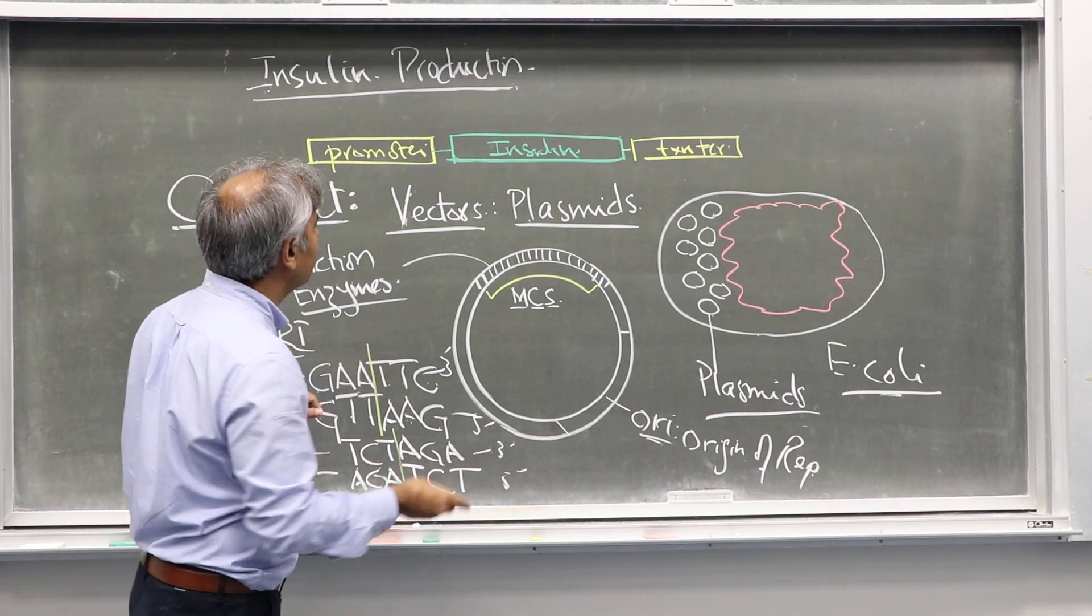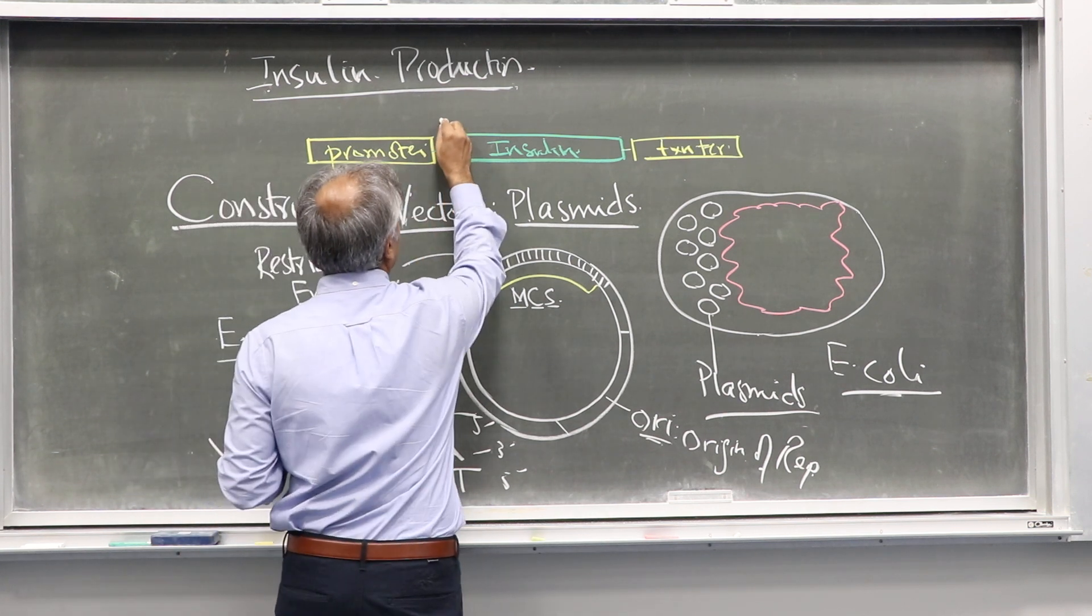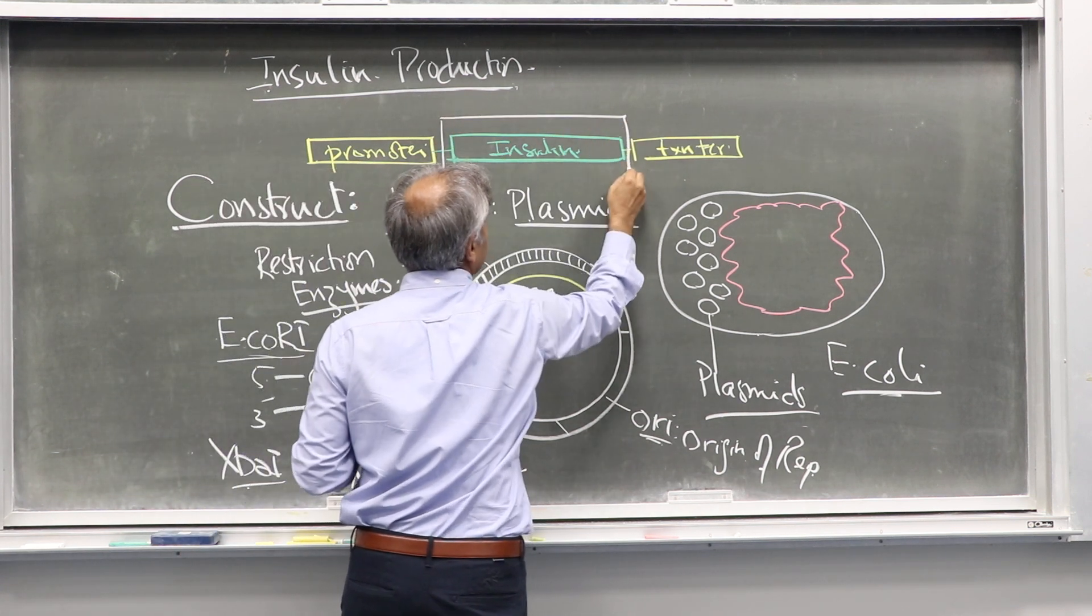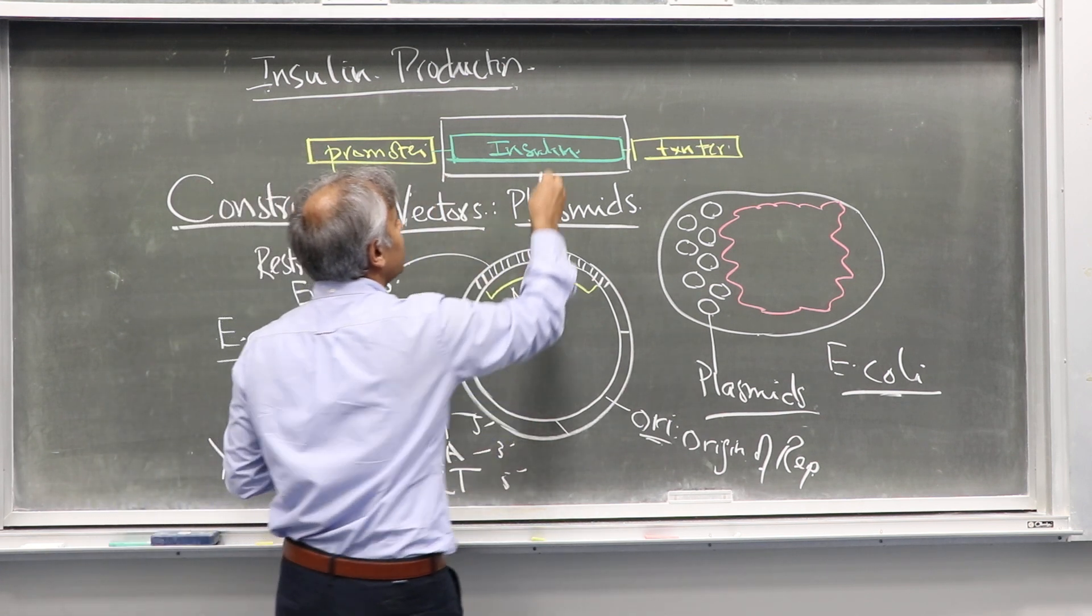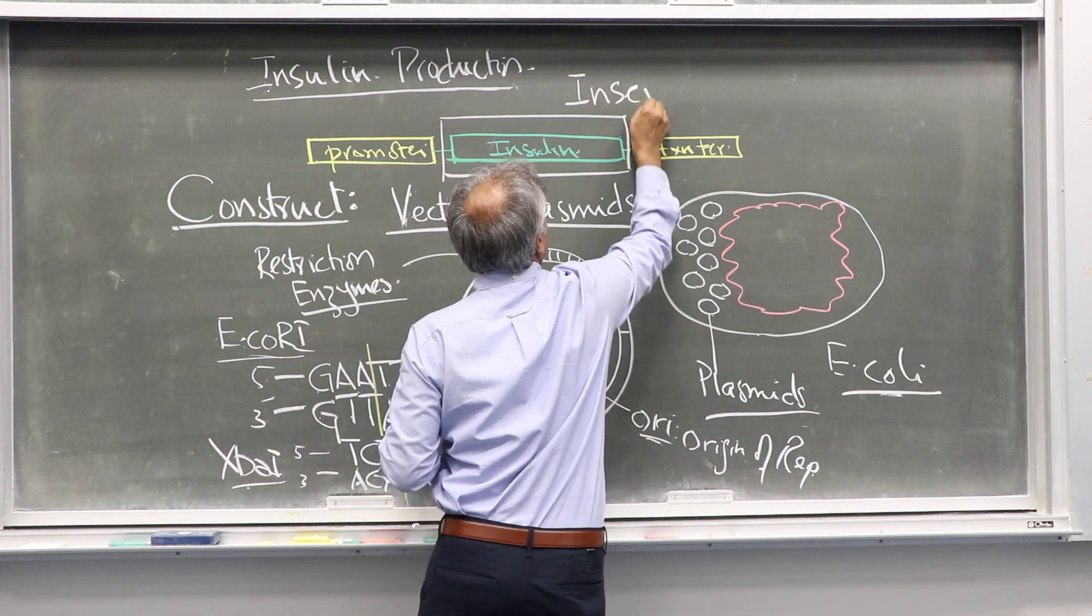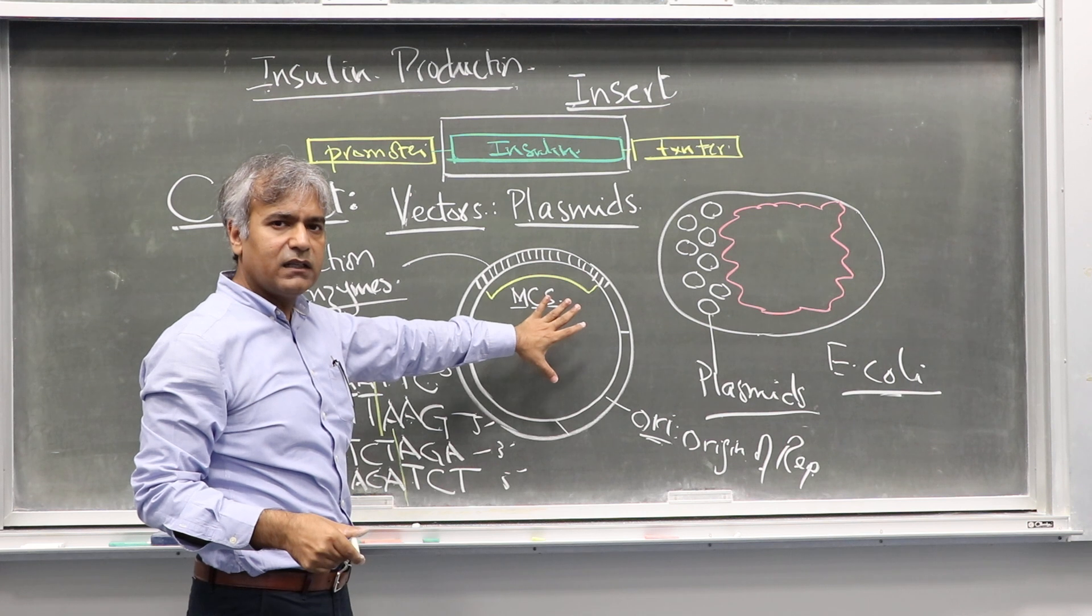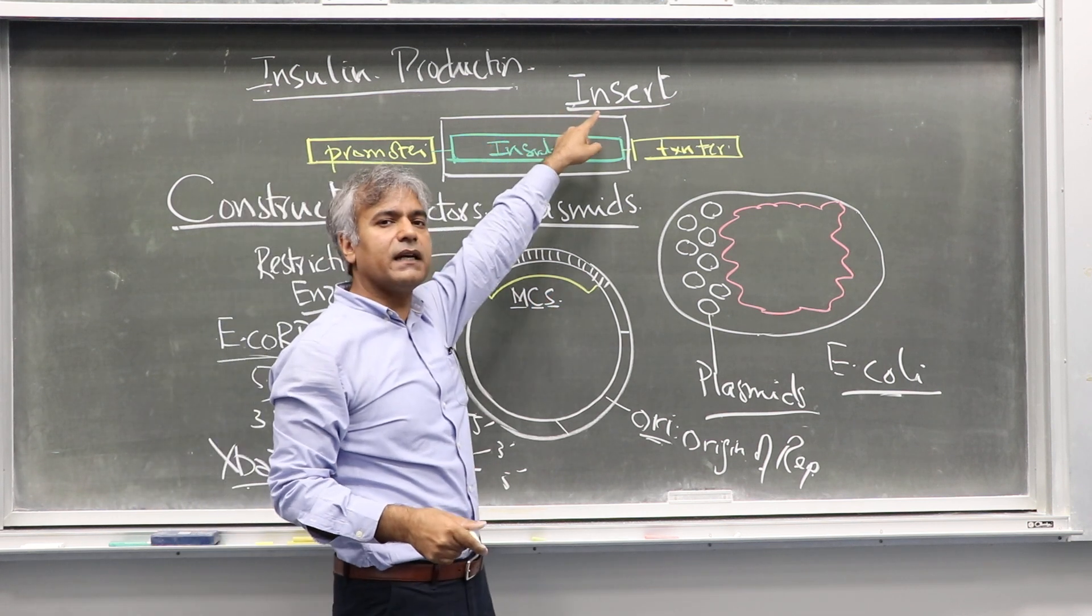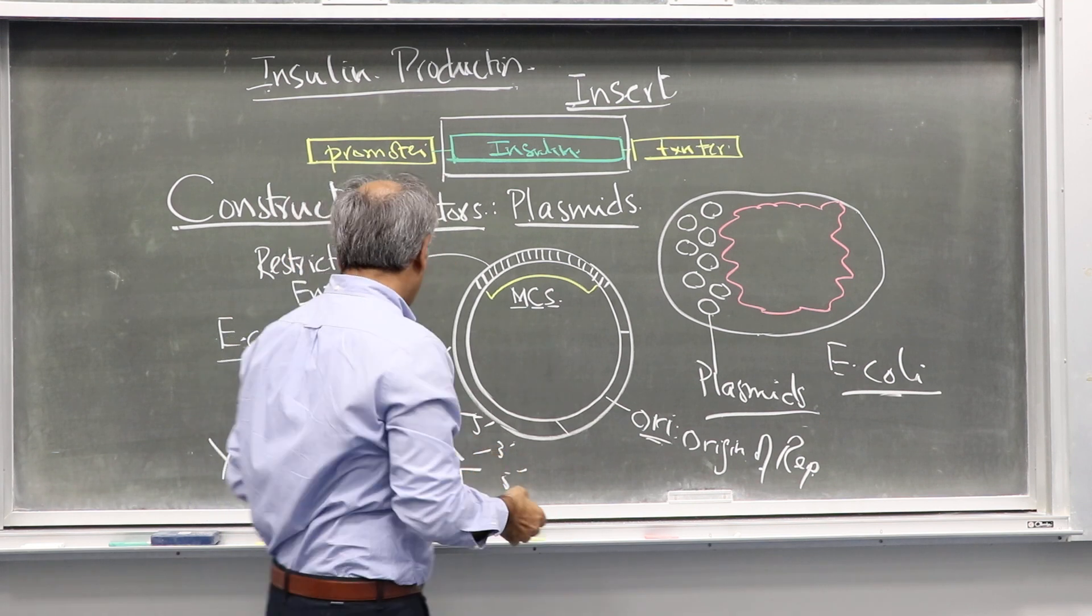Now let's talk about the second component of the construct, which is our insulin gene. In cloning and recombinant DNA technology, we refer to this part as the insert. So this is a vector, the plasmid, and this is the insert which needs to be cloned or inserted inside the plasmid.